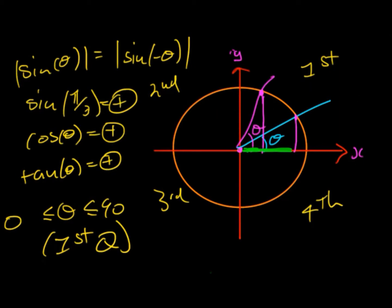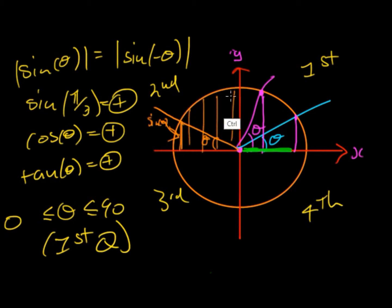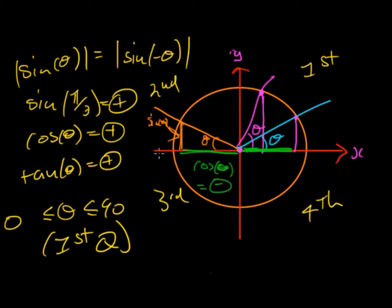What about the second quadrant? If we call that angle theta, sine is still positive because we're still in the positive y-axis — anywhere along this line, sine is still going to be a positive number. But cos is now negative, because before x was positive and now x is negative in the second quadrant. So in the first quadrant sine is positive, and in the second quadrant sine is also positive, but for cos it's only positive in the first quadrant and negative in the second.